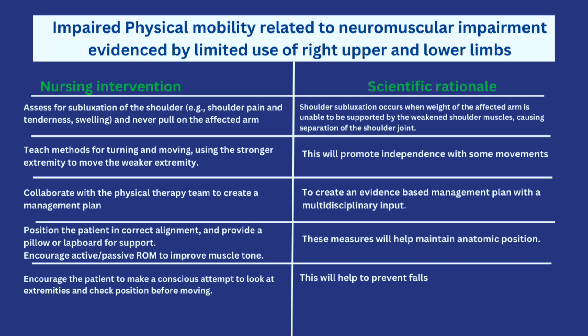The next thing is to teach methods for turning and moving using the stronger extremities to move the weaker extremities. So you want Mr. Ajao to turn by using the left hand to move the right hand and the left leg to push the right leg. This promotes independence with movements such as turning — the patient can turn on their own using unaffected limbs, which boosts their mood and reduces the feeling of being fully dependent on others.